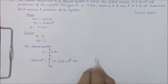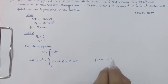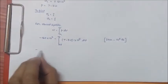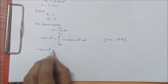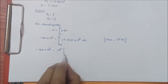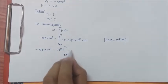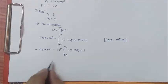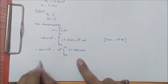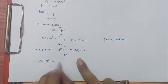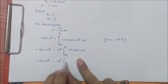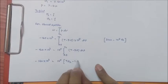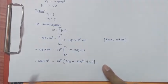Since 1 bar is equal to 10 to the power 5 Pascal, P can be written multiplied by 10 to the power 5 dV. So we have minus 160 into 10 to the power 3 is equal to 10 to the power 5 times the integral from 0.8 to V2 of (7 minus 3V) dV. Integrating this, we get on the right hand side: 7V2 minus 1.5V2 squared minus 4.64.